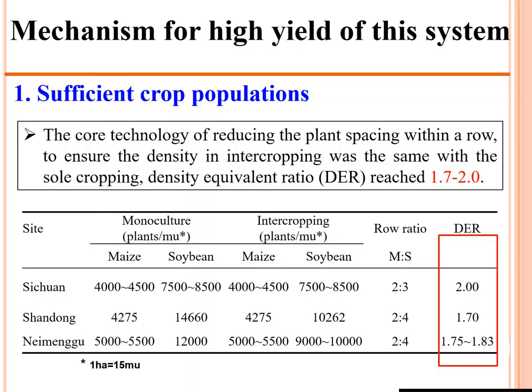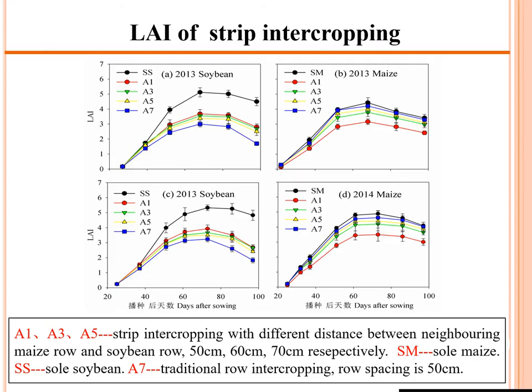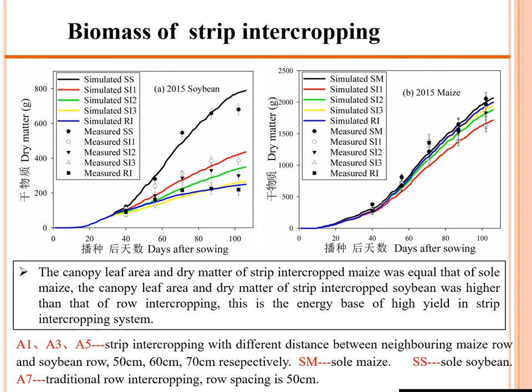The mechanisms for high yield include: first, sufficient crop population. The density equivalent ratio in our intercropping system reaches from 1.7 to 2.0. The leaf area index of strip intercropping maize almost achieves the same value as sole cropping, while soybean suffers only slight shading with leaf area slightly less than sole cropping. Biomass follows the same trend as leaf area index in both intercropping and sole cropping systems.